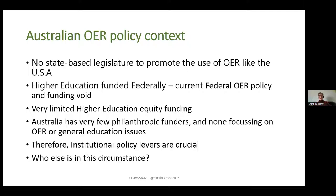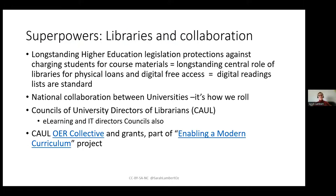What that means is that institutional policy levers are absolutely crucial. What we do have in Australia that's more baked in than some other places is libraries as real superpowers — long-standing advocates for physical and digital access to learning materials, and digital reading lists, which are much slower to happen overseas as a standard thing.